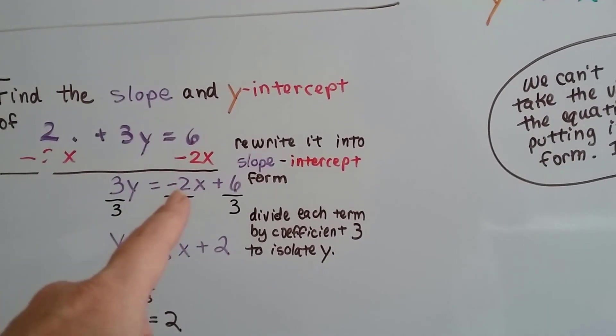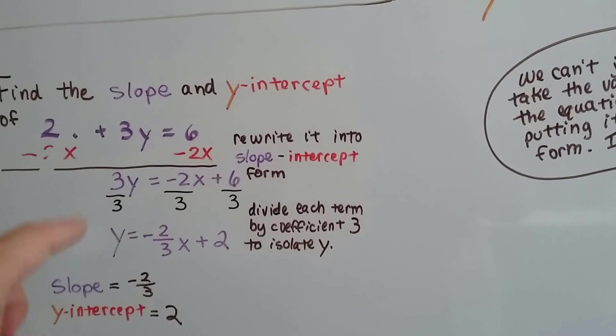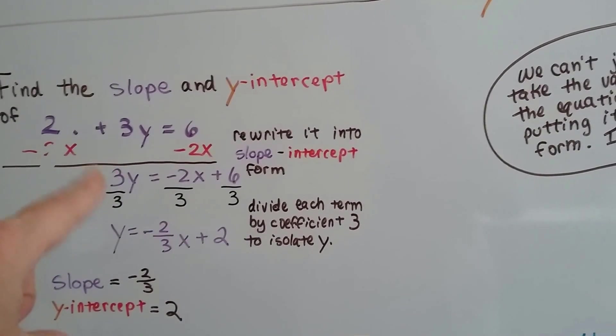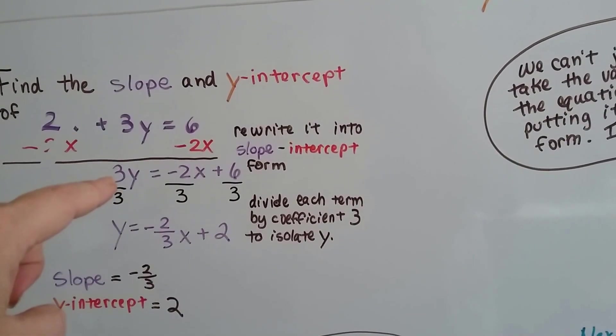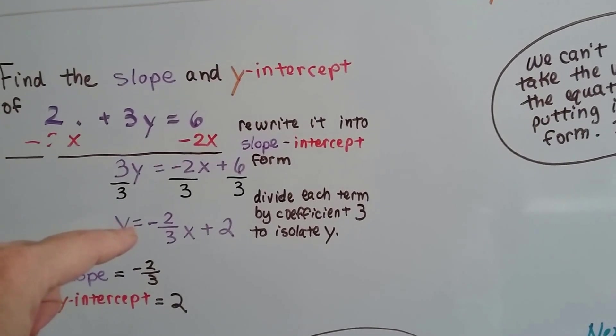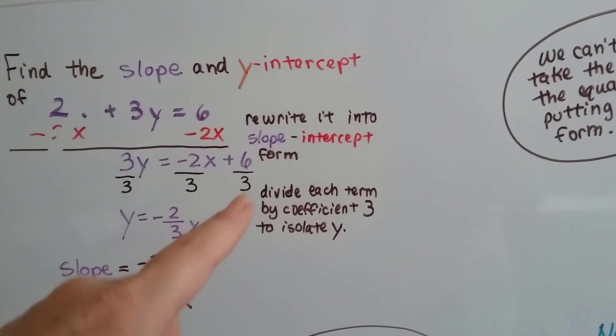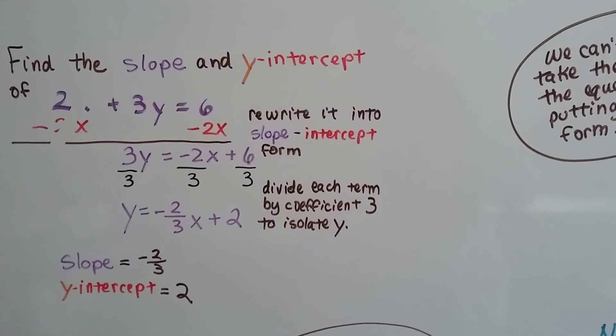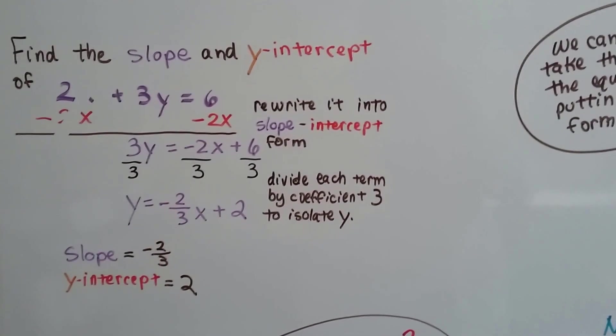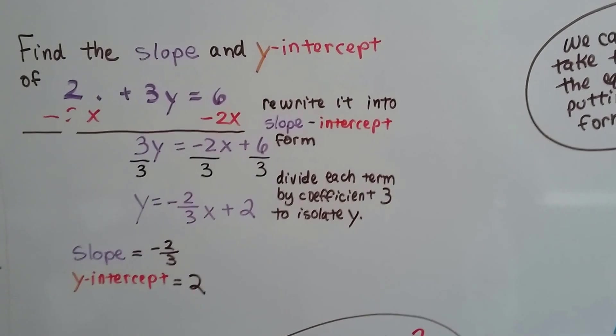Then we divide each term by this coefficient 3. We get our friend the invisible 1, the identity property. And we get y equals negative 2 thirds x plus 2, because 6 divided by 3 is 2. So our slope is negative 2 thirds and our y-intercept is 2.